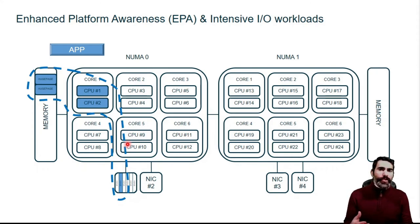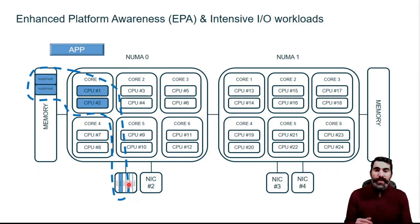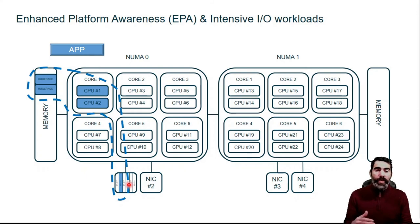So in this situation our application has maximum performance. But I haven't said anything about EPA yet — what is EPA? In this situation we do not need EPA. Our application is running directly on the server. We have seen how the server looks, and we have pinned that we want to use this CPU, this memory, and this dedicated interface. But when we have a virtualization layer — when we are running a virtual machine or a container — we do not have this visibility and we do not have this control of the physical resources. So in principle our application cannot be that efficient. That is why we use EPA.